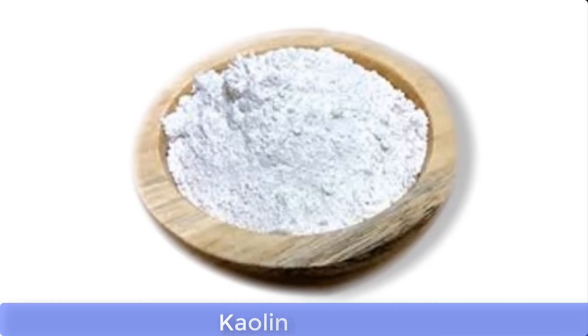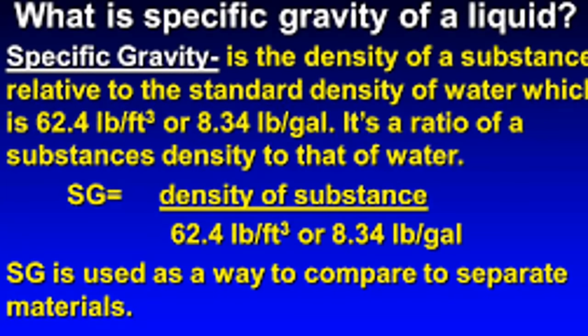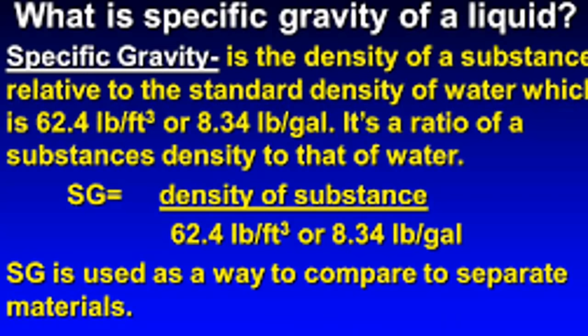The next important concept is the specific gravity of the soda solution, because it determines the toxicity of the soap on the human skin. For toilet soap and medicated soap, specific gravity also determines hardness or softness. Bar soap requires a specific gravity of 1.275, while toilet soap and medicated soap require a specific gravity of 1.250, as they are generally softer and that is ideal for the human skin. Specific gravity is defined here as the ratio of the density of caustic soda to the density of water.